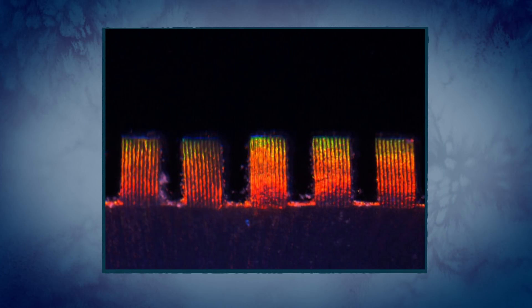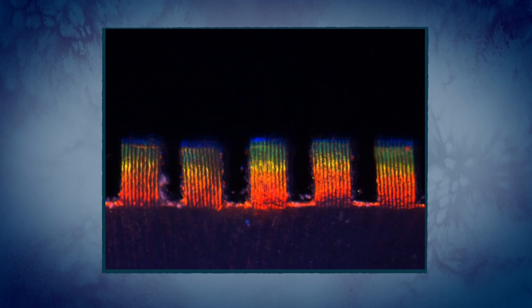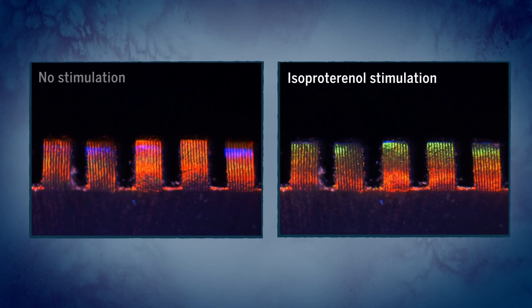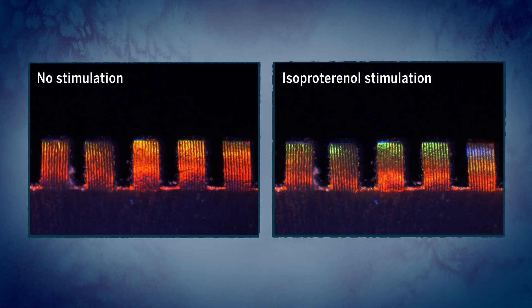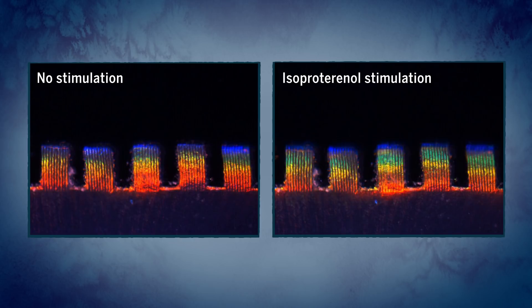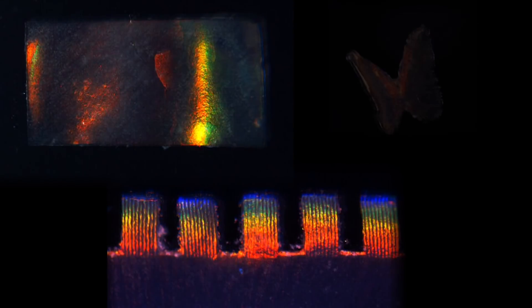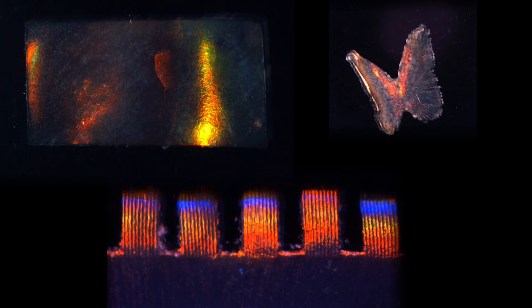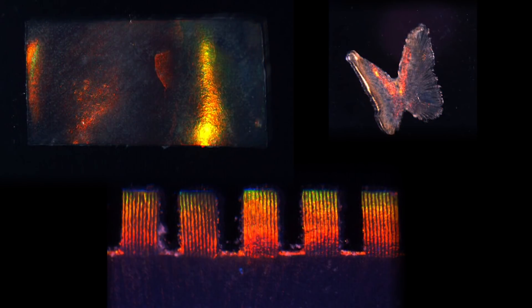They tested the heart on a chip by adding various concentrations of a drug, which is known to change the heart rate. Different concentrations of the drug made the heart cells beat at different frequencies, and produced shifts in the structural color of the gel. This platform could make it easier to monitor the effects of drugs and testing using only the naked eye.